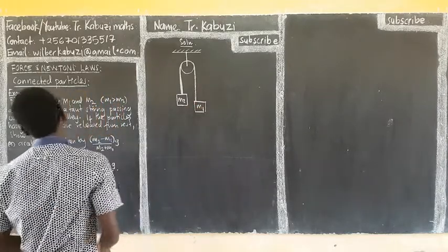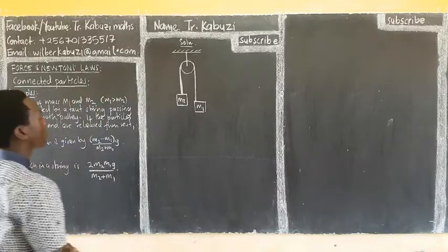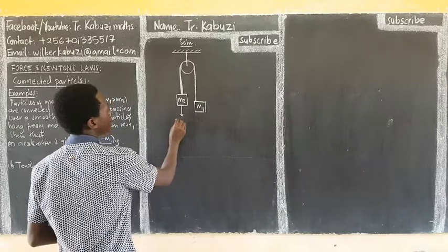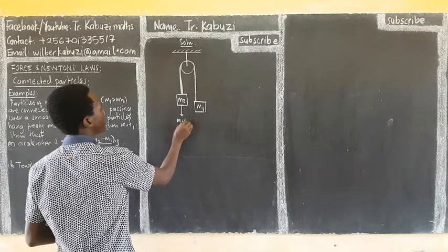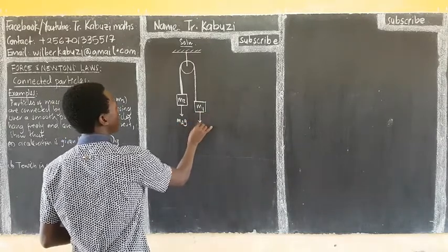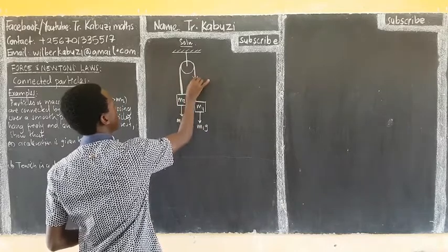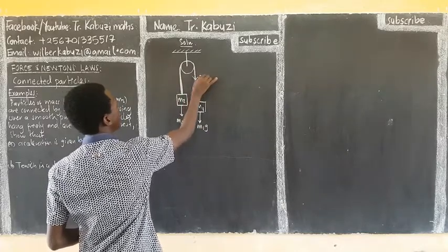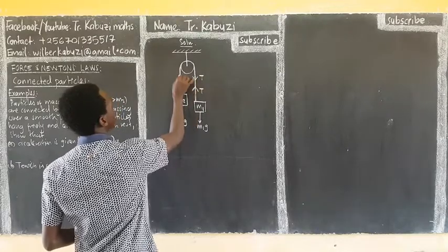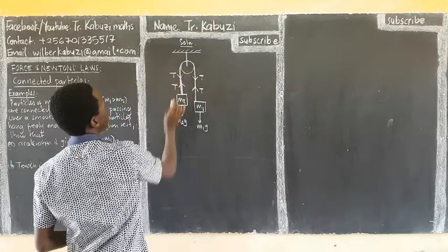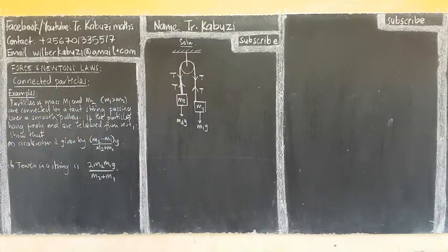Okay, so finally the string. Because this one, we are going to have our weight, which is going to be M2g. Then this one is also having a weight, M1g. Then the tension in the string is going to be there, T. Then also because it's the same string passing over, the tension is going to be the same. So that is the idea.